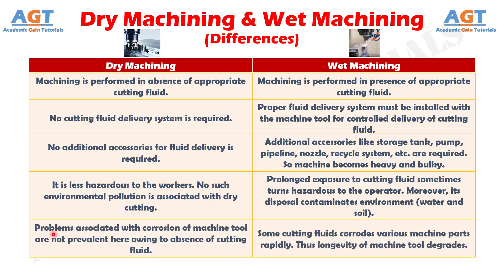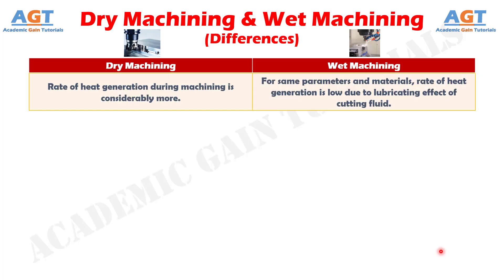Number 5: In dry machining, problems associated with corrosion of machine tool are not prevalent owing to the absence of cutting fluid, whereas in wet machining, some cutting fluids corrode various machine parts rapidly. Thus, the longevity of the machine tool degrades.